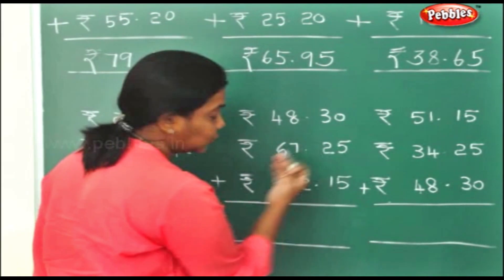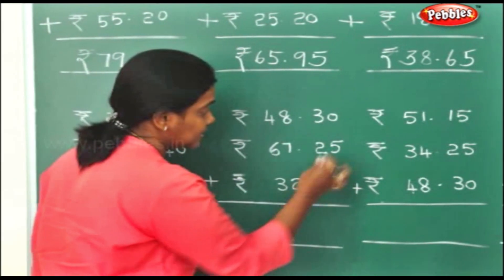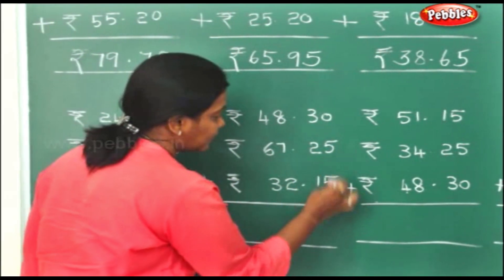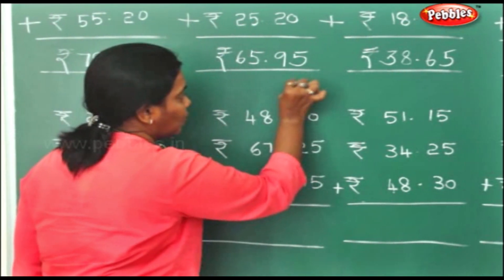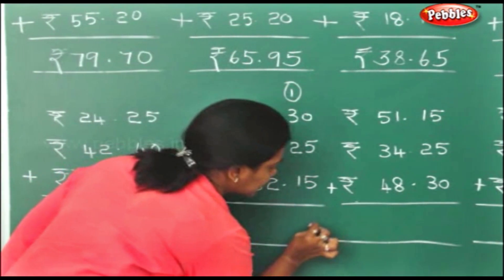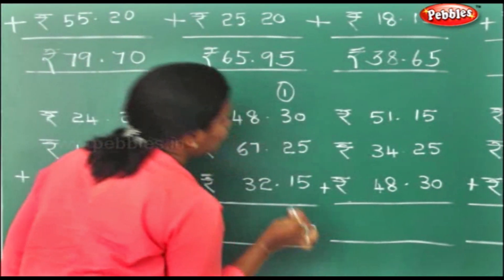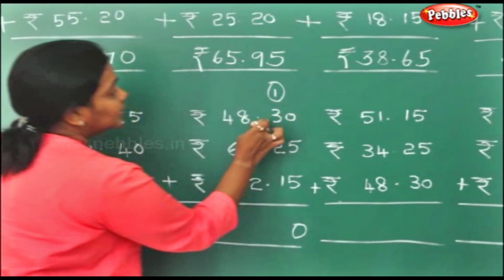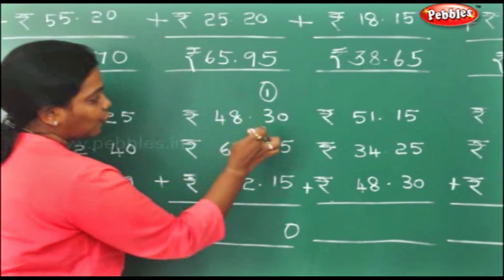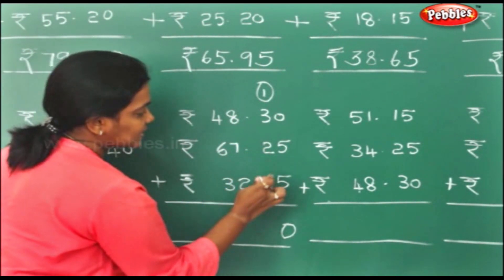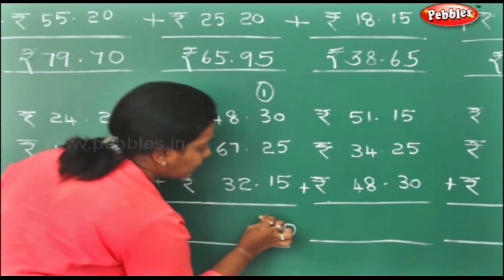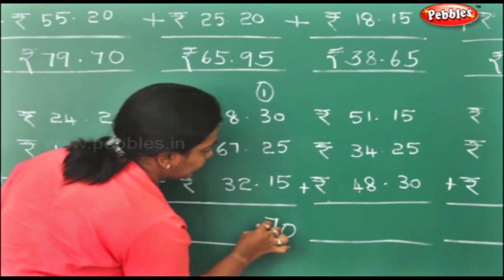Same way, we'll start doing from the paise. 5 plus 5 is 10, carrying the 1 on top, putting 0 down. 3 plus 1 is 4. 3 plus 1 is 4, 4 plus 2 is 6, 6 plus 1 is 7.